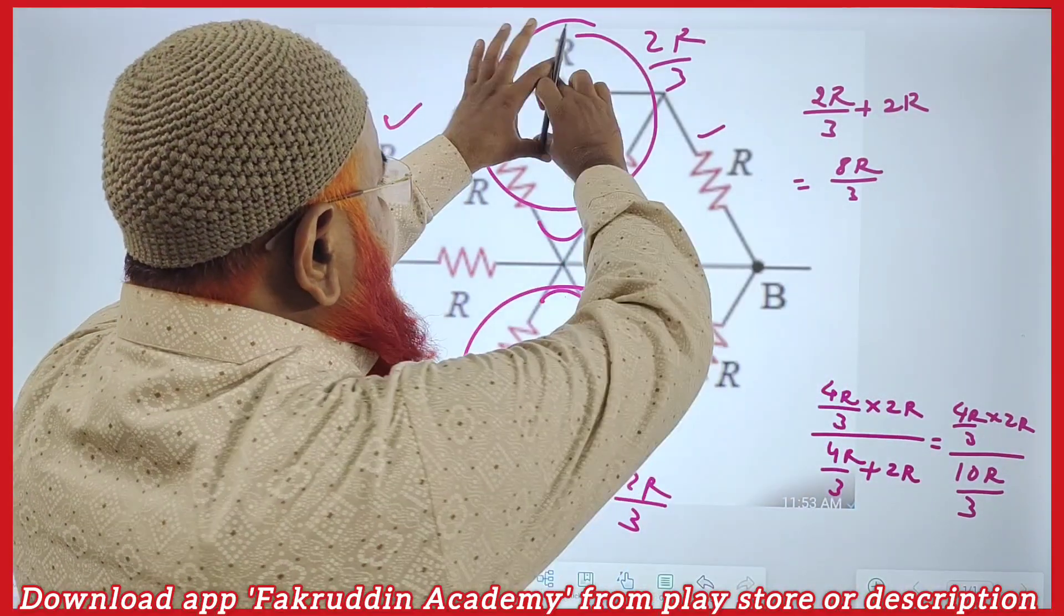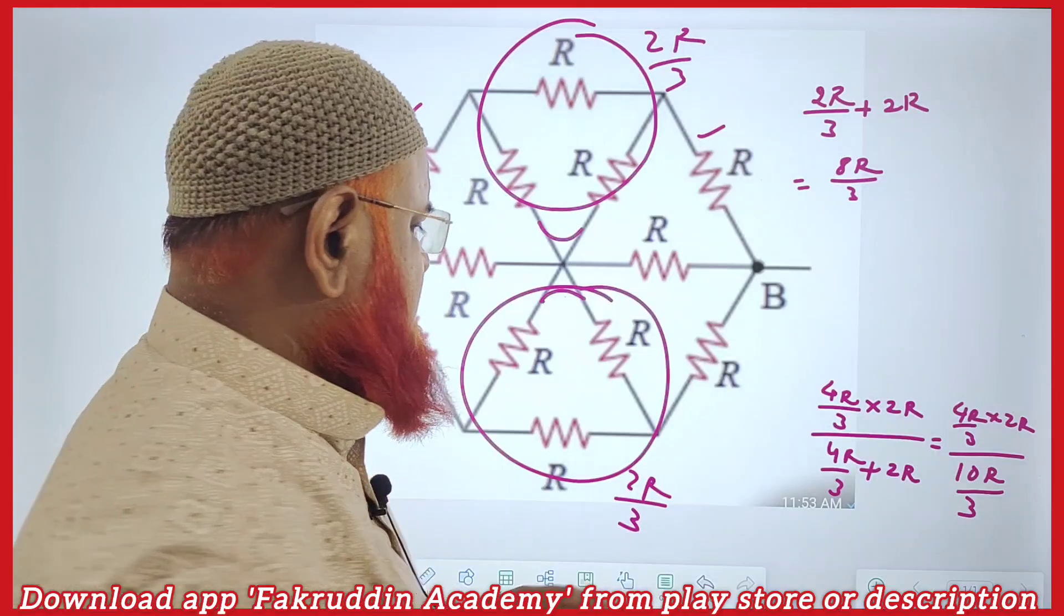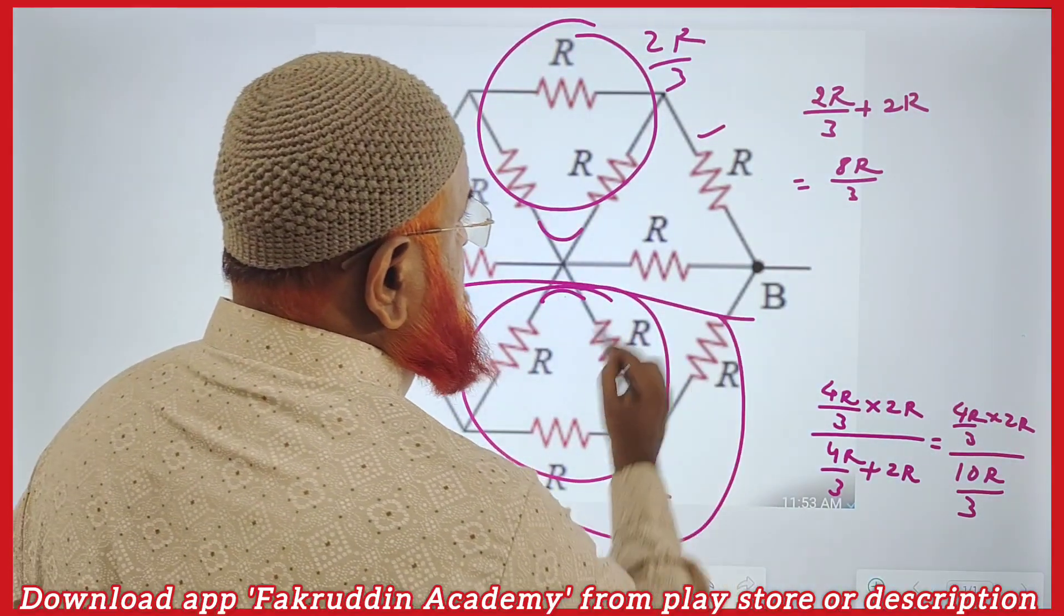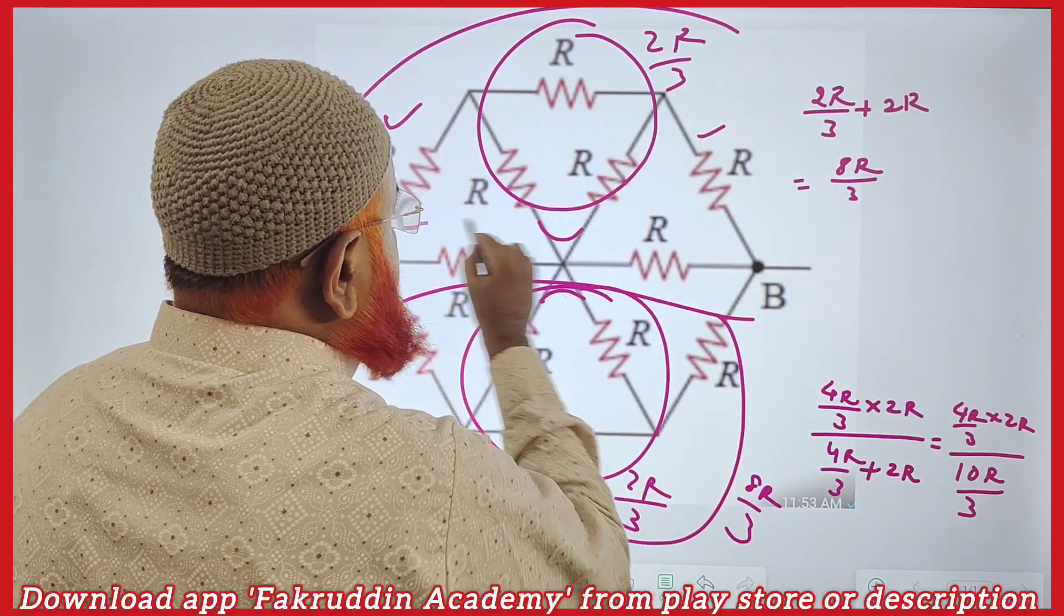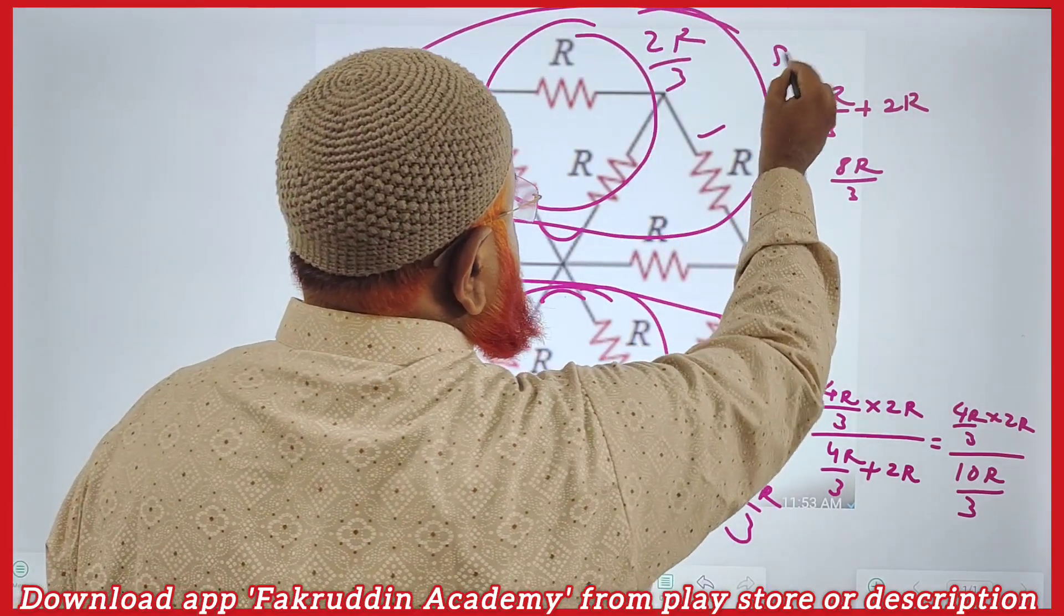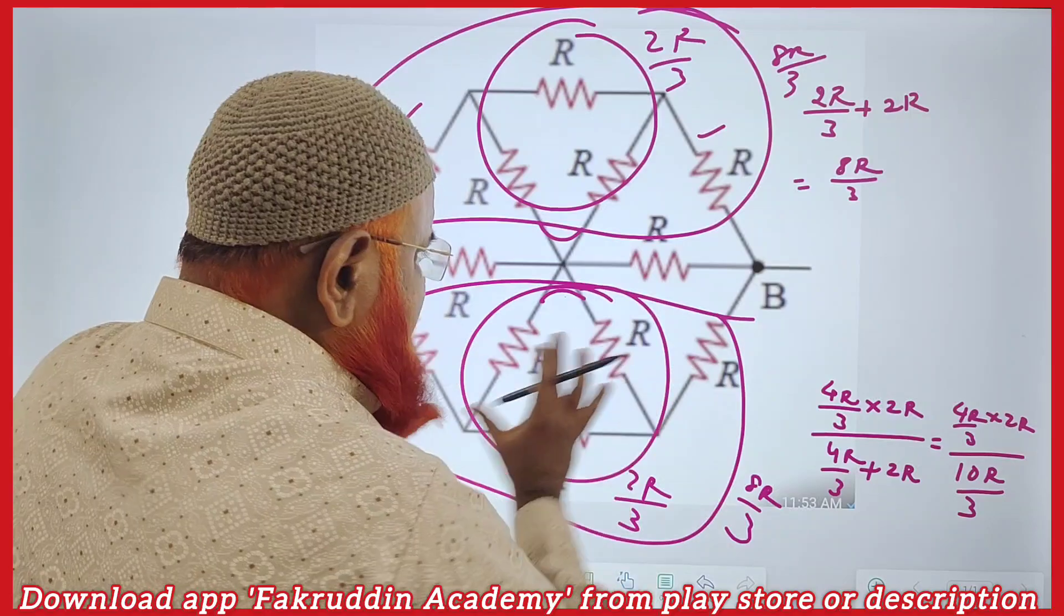because these two are adding and they are in series. Similarly, this much part of the circuit, if you consider, it is 8R by 3. And this total circuit is 8R by 3